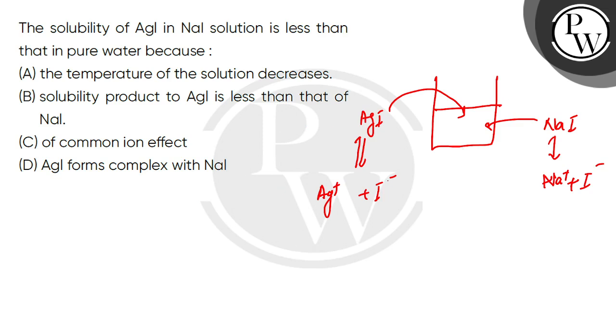AgI is partially dissociated, so one common ion is I negative, and NaI which is completely dissociated also provides I negative ions.